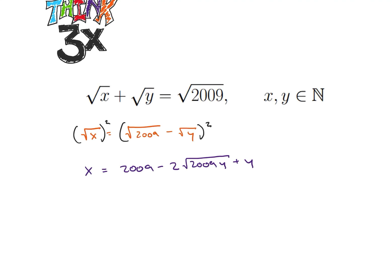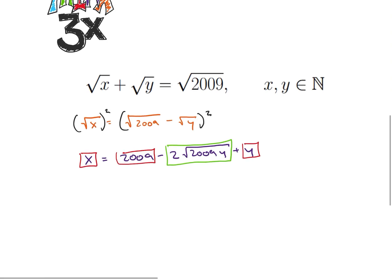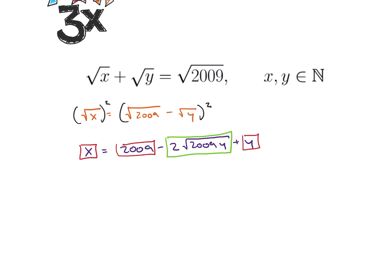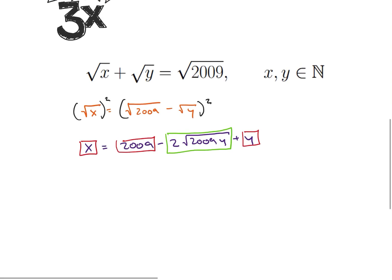And why is this helpful? Well, this is helpful because we know y is a natural number, we know 2009 is a natural number, we know x is a natural number. That means that this guy right here must be an integer. So if that's an integer, then that kind of helps us out a little bit. So what does that mean? That means that square root of 2009y must be an integer.